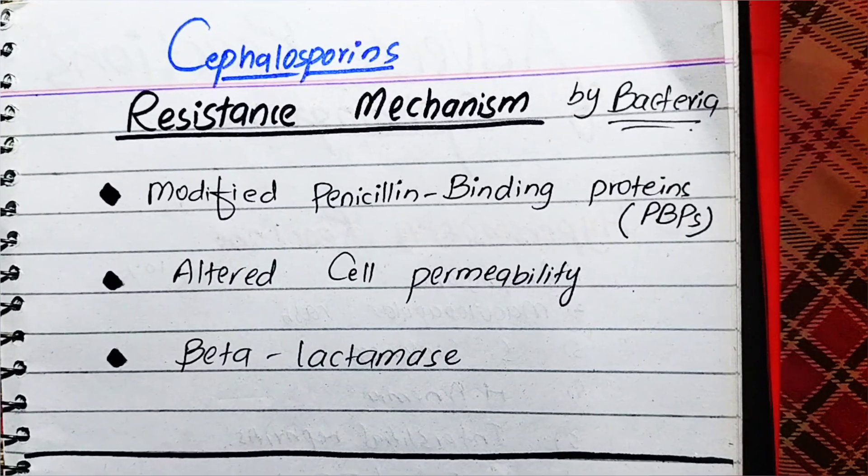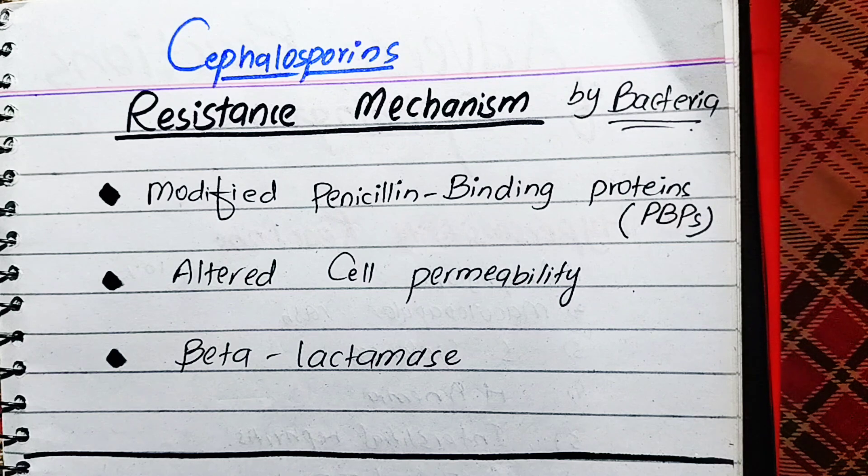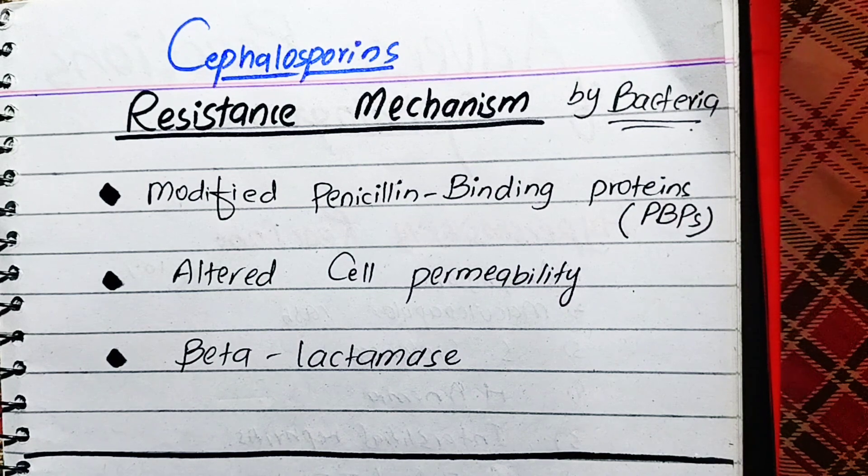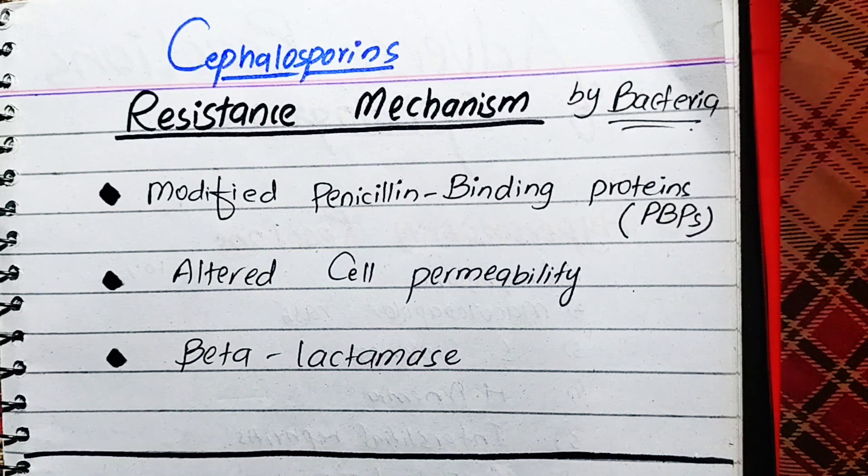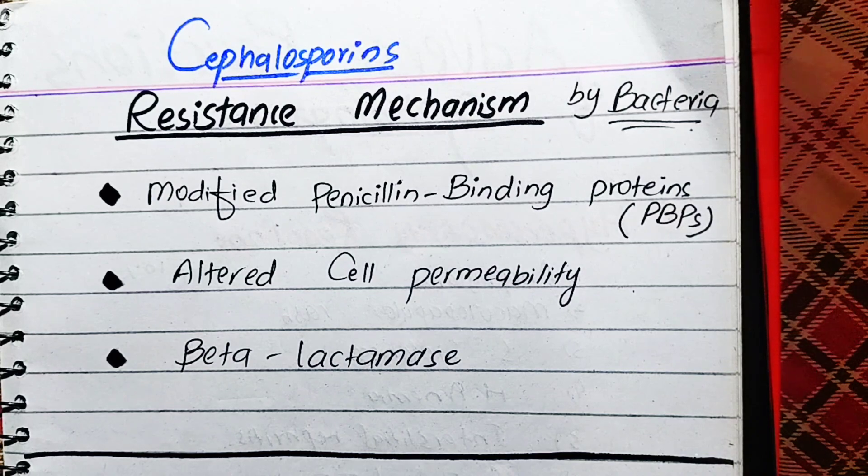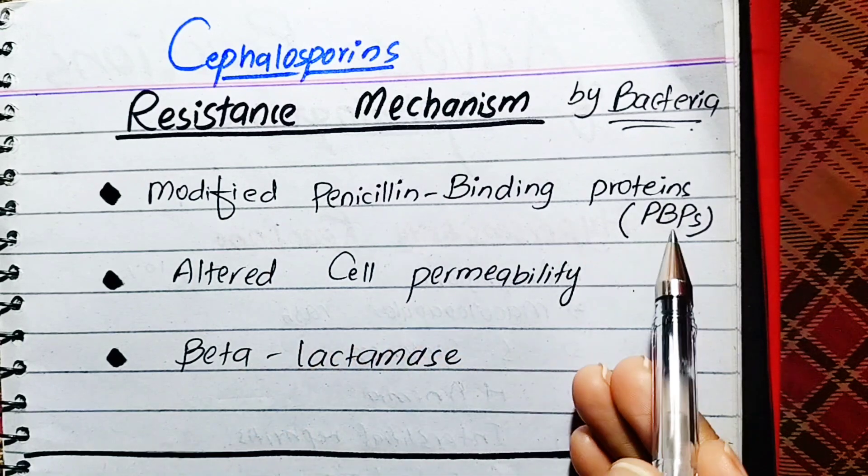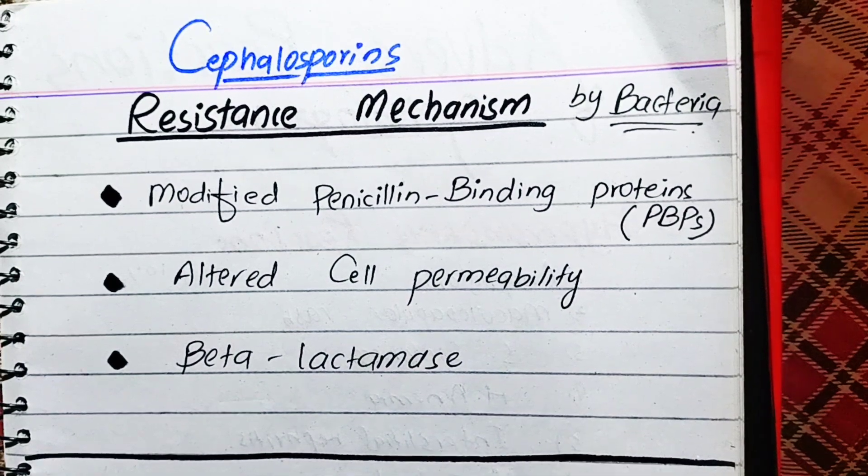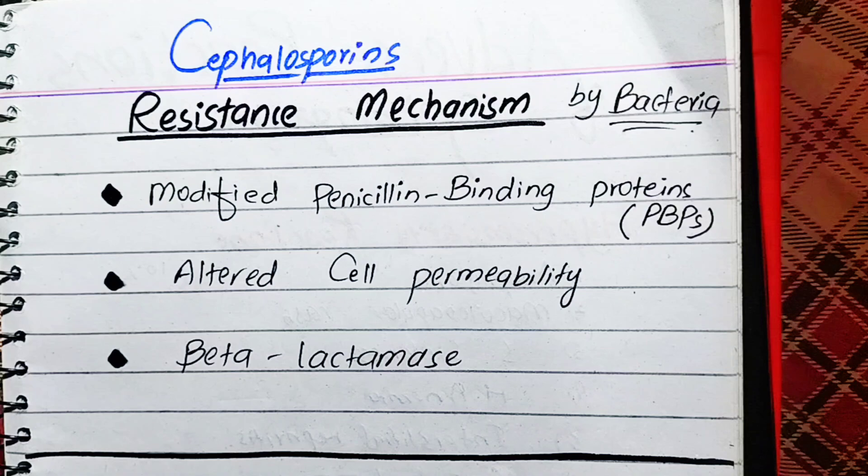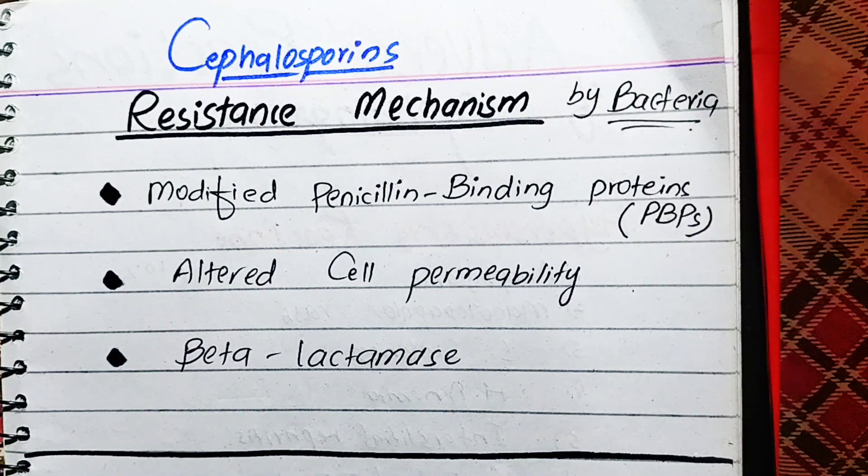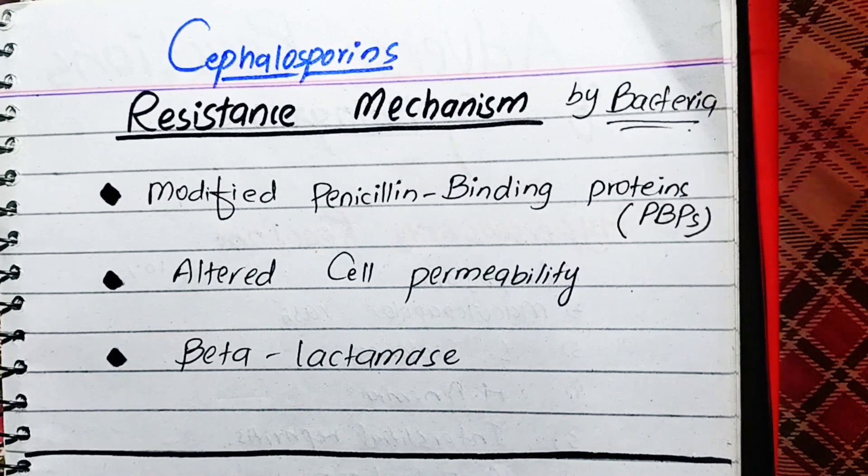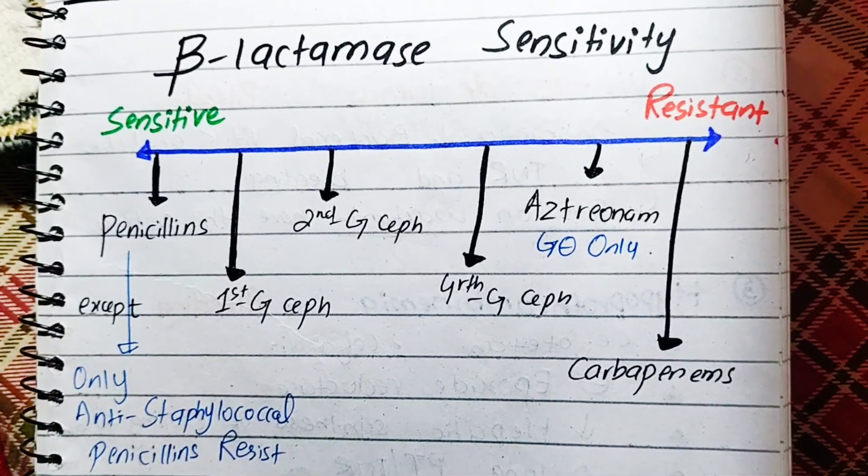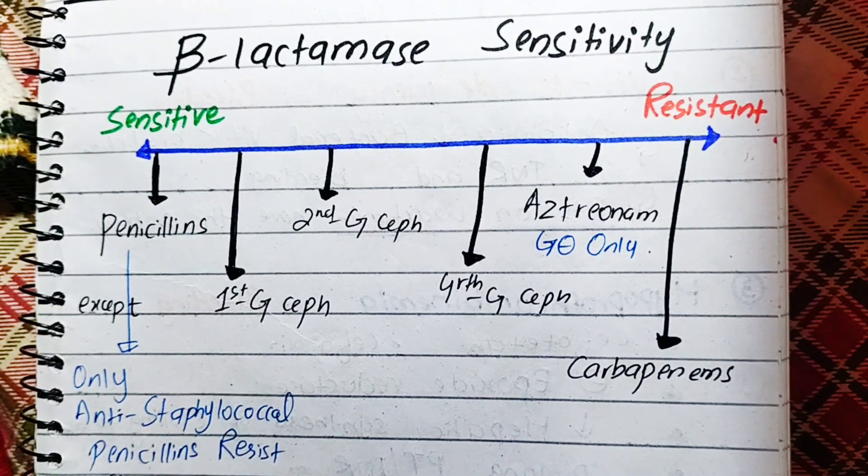Now we will talk about the Penicillin against bacteria, which has been developed by the resistance of the bacteria. So when we have given the bacteria, the bacteria also have to kill the bacteria. Now what is the mechanism? Most of the same. We have modified penicillin binding proteins by genetic mutation. We have to alter the cell permeability, alter the channel. Third, we have to kill the enzyme. So this is what we can say.